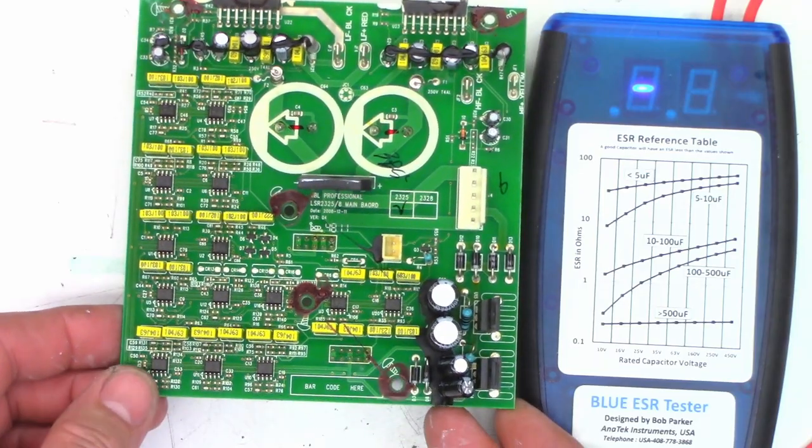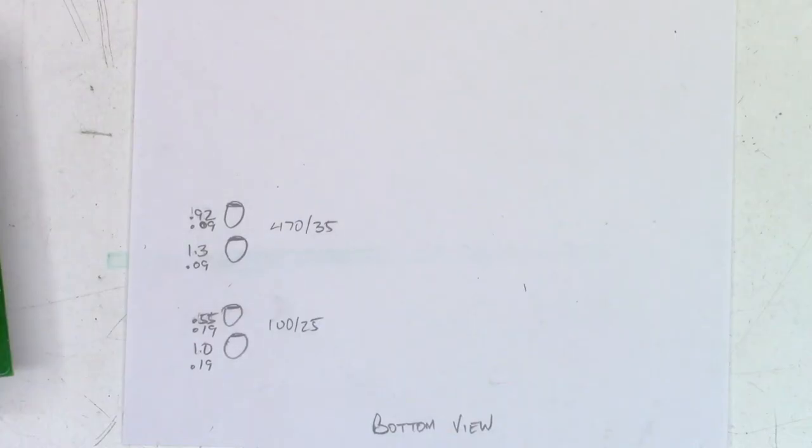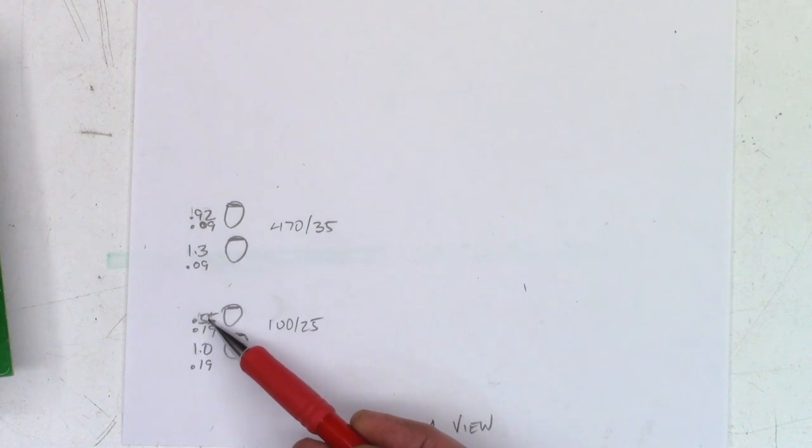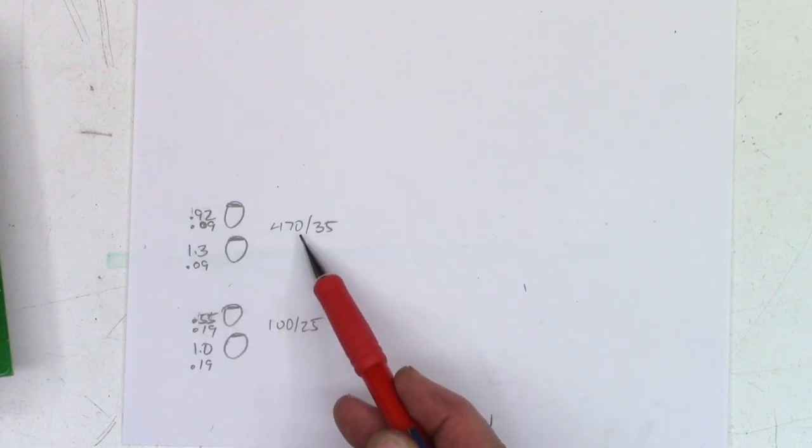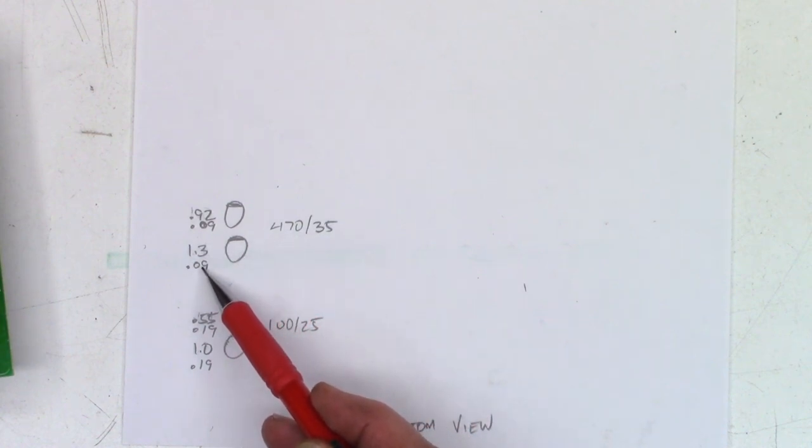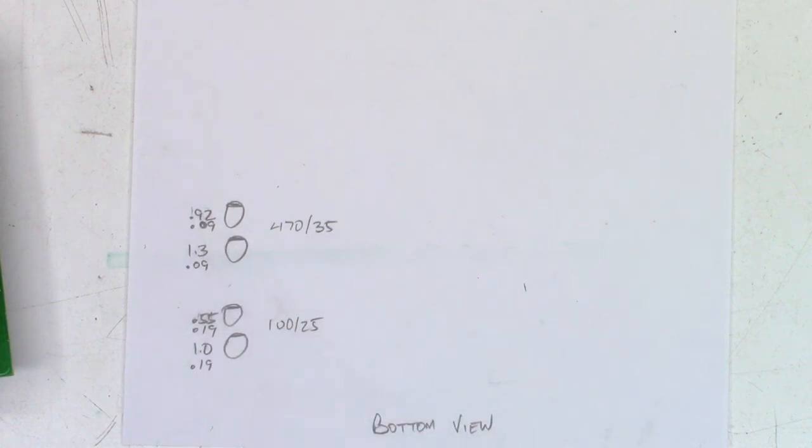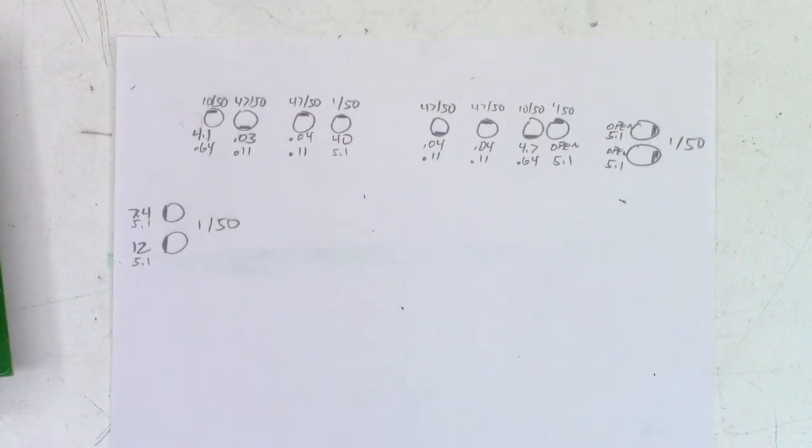So I'm going to contact the customer and see if he wants to proceed with the repair, changing all six caps in each channel plus the four caps down here in the regulator stage. So here are the ESR of the old capacitors that are still on the board versus the new capacitors that I'm going to install. So the old capacitor value is up on top, the new capacitor value is on the bottom. So as you can see, the 100s at 25, the old ones read one ohm, the new ones read 0.19, 0.55, 0.19. The 470s at 35, which are the input filter caps, 1.3, the new ones are 0.09 ohms, which is a much closer value that I'd like to see. 0.92 for the old, 0.09 for the new.